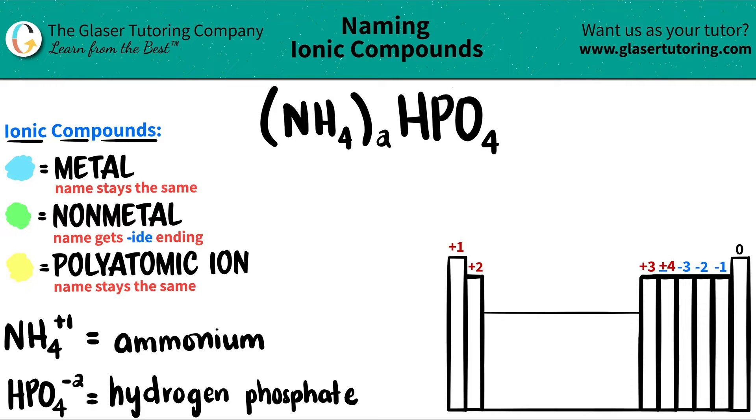Today, we are going to be naming the ionic compound (NH4)3HPO4.